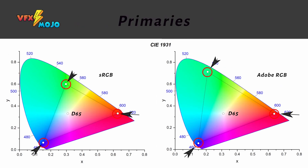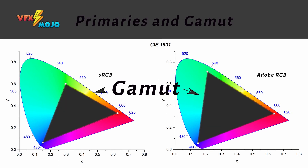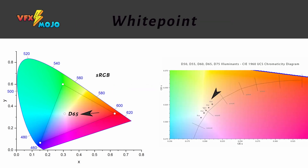A color space is defined through three points on the CIE XYZ chart. The primaries, which define RGB, are the extreme vertices of a color space. All colors within these three vertices create the gamut — these are all the achievable colors of the color space.